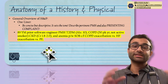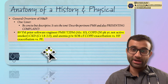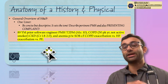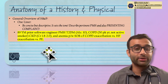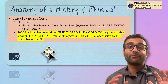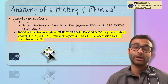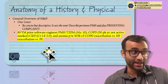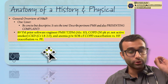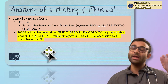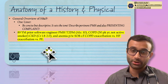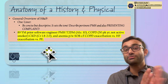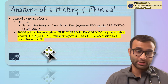A one-liner is kind of like the TLDR of the H&P — what exactly is going on, and if I don't have time to read all of it, what's the biggest thing I should know? I always try to include relevant facets of the past medical history and distinctly tell the reader what I think is going on. Even if they don't agree, at least you've substantiated what you were thinking.